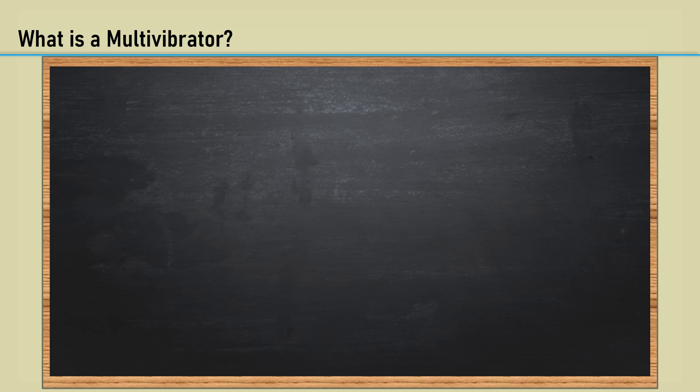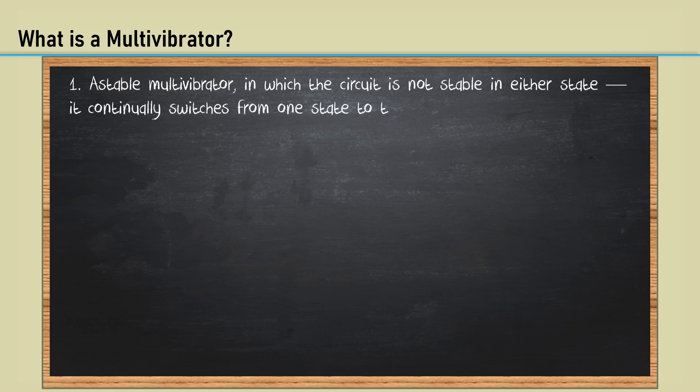What is a multivibrator? Astable multivibrator, in which the circuit is not stable in either state. It continually switches from one state to the other. It functions as a relaxation oscillator.